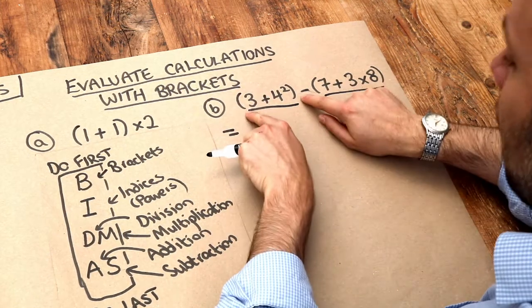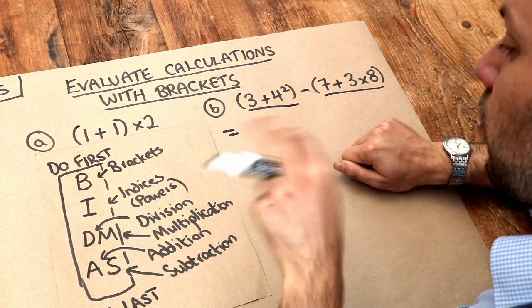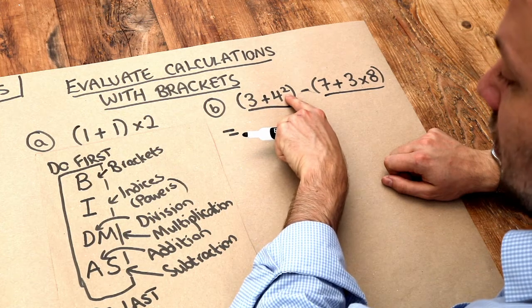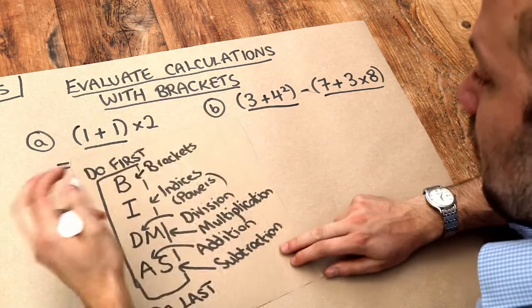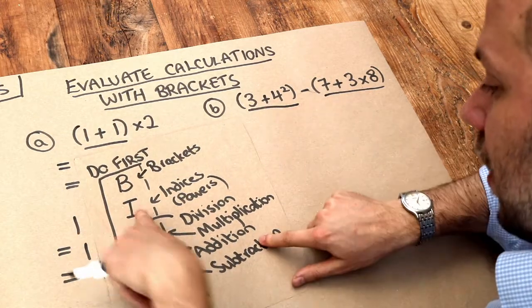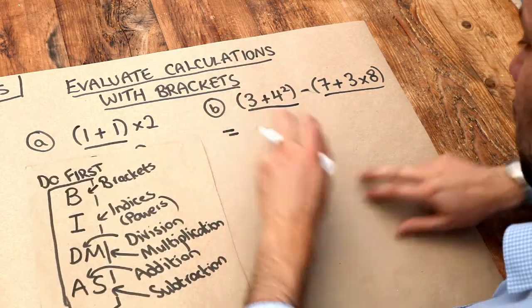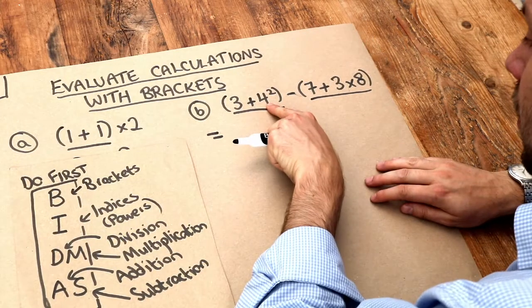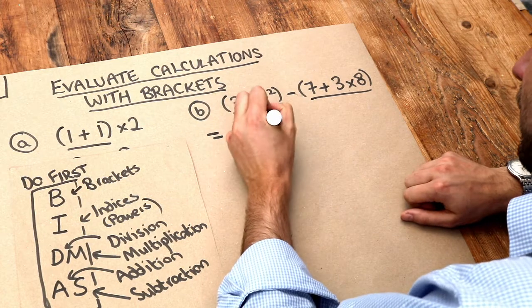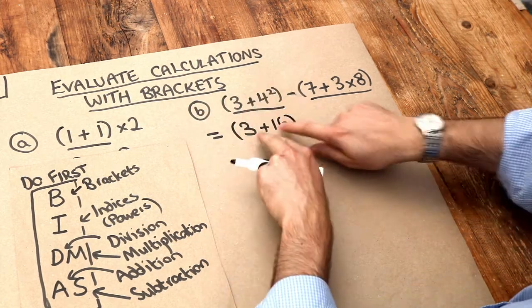Now once you get inside the brackets, we still use BIDMAS. So within this bracket we've got this addition and we've got this power. So we have to apply the rules of BIDMAS still, so we can see that powers comes above addition. So that power there is 16, so we've got 3 plus 16, and I'm still going to put the bracket here because I'm still going to work this out.